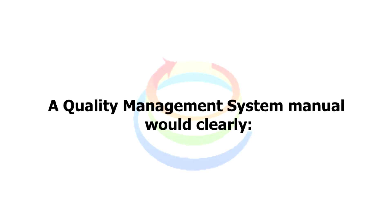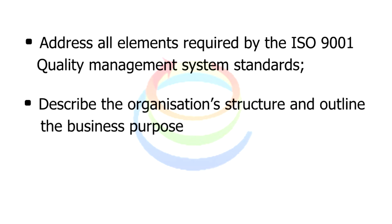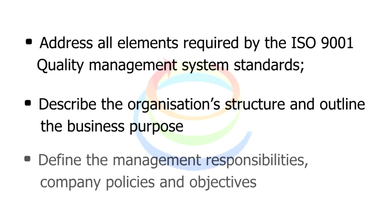A Quality Management System manual would clearly address all elements required by the ISO 9001 Quality Management System standards, describe the organization structure and outline the business purpose, define the management responsibilities, company policies, and objectives.